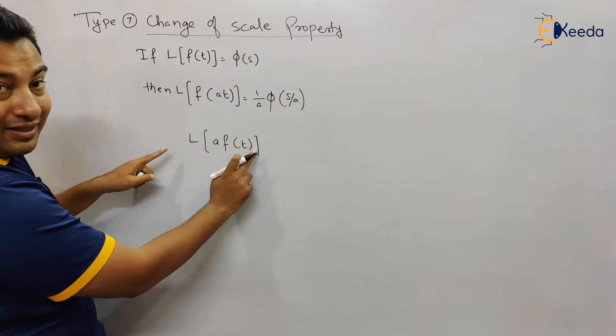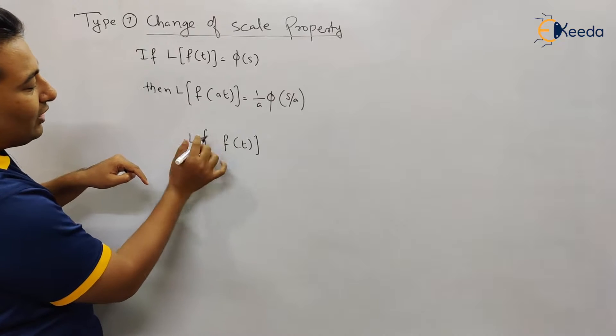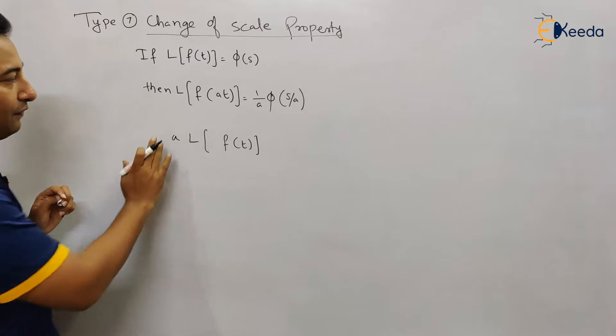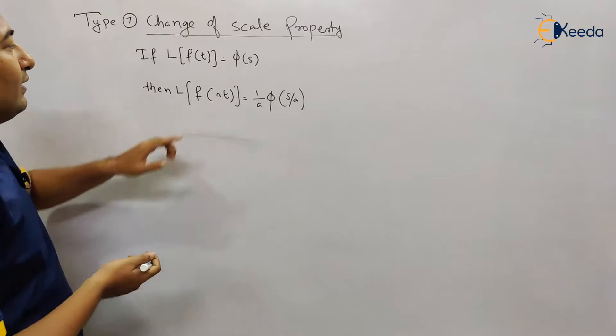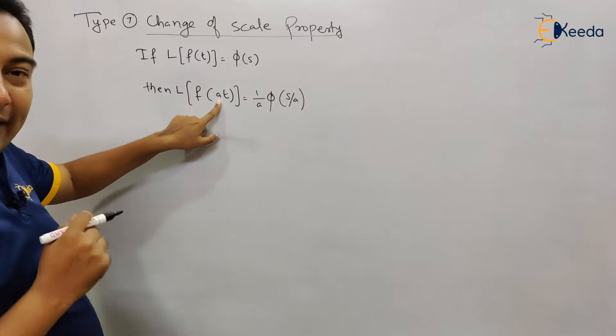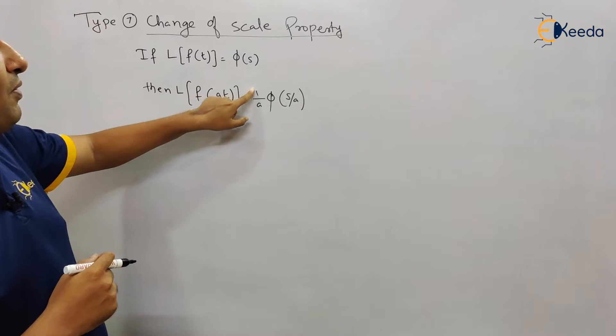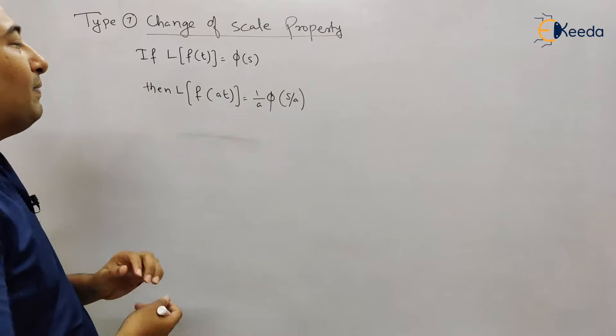If this is the scaling property case, then a is a constant that will come out - that's a different story. Here, t is multiplied with a, then it will be 1/a and s will be replaced by s/a.